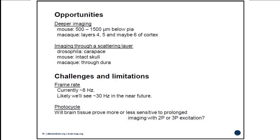All of the three-photon microscopy we're likely to do is in the one-to-two-micron wavelength range. There are really two wavelengths of use: at 1,300 nm there's a dip in the water absorption spectrum, and the second one is at 1,700 nm. These are really the only two places you're likely to be able to do three-photon microscopy, because water absorption is so high across the rest of that spectral range. GCaMP's three-photon peak is right at 1,300 nm, and 1,700 nm is a great wavelength for tdTomato and many red fluorescent indicators.